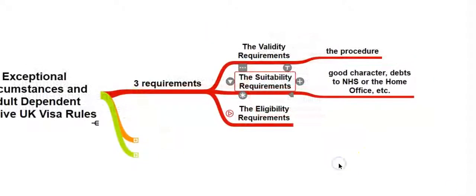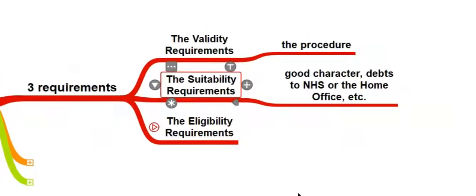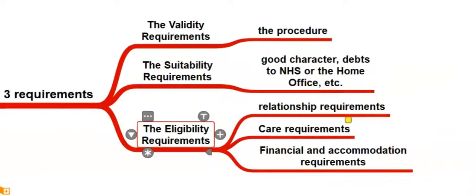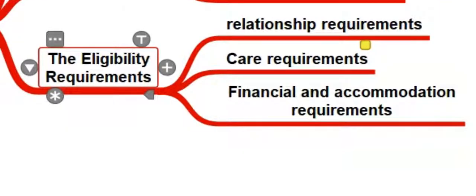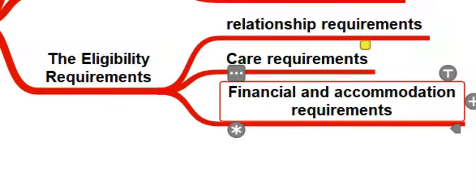The suitability requirements are all about showing that you are of good character, that you don't have any debts to the NHS over £500, that you've repaid all litigation costs to the Home Office if applicable, that you have provided the Home Office with all necessary information, provided the undertaking form, and attended any interview if requested. The eligibility requirements consist of three key components: the relationship requirements, care requirements, and the financial requirements which should be met by the sponsor.